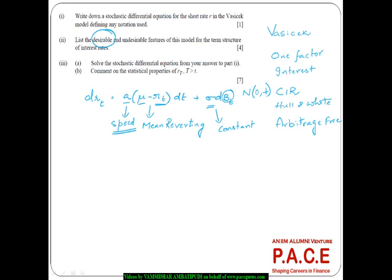However, if you look at this equation, especially if mu is very, very small, there is a possibility that interest rates can come out to be negative, which in the real world may not exist for a longer period of time. This model cannot avoid the output of interest rates being negative, so it may not be a direct fit to the real world.